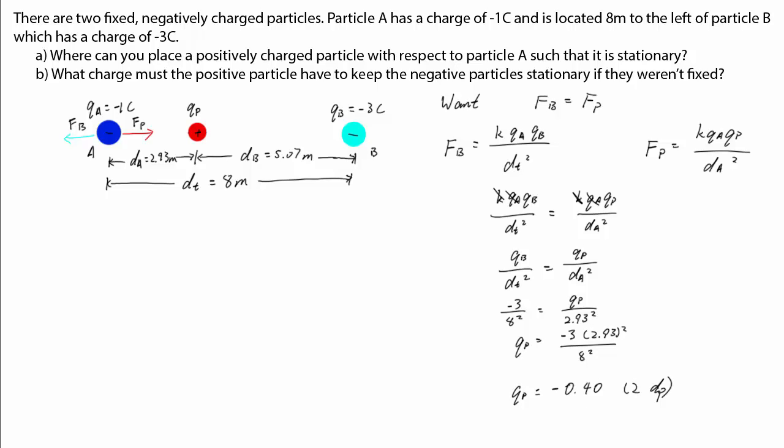Which is telling us that the charge the positive particle must have is negative. So it is in fact a negative particle. That's weird. However, we can make sense of this by remembering that force is a vector and so it has direction.